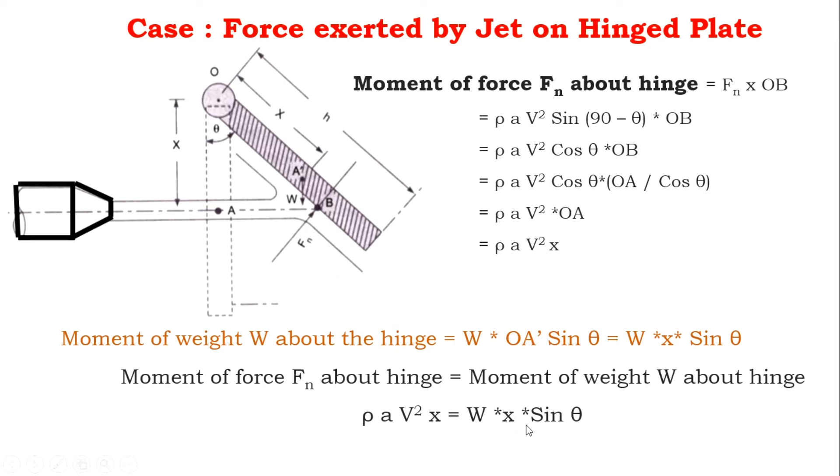From here we get sin θ equals ρAV² divided by W. The above equation derived here provides the angle of swing of the plate when water strikes the vertical plate which is fixed at a hinge.